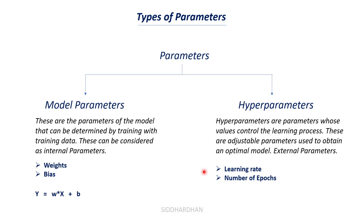A few examples of hyperparameters are learning rate and number of epochs. In each iteration, we make the model go through the data and at each iteration we change the weight value so the model becomes better. How much change the weight undergoes is determined by the learning rate. For example, if the weight value is 5 and for the next iteration I want it to be 7, the change is 2 — this magnitude of change is determined by the learning rate. Number of epochs is your iteration count.